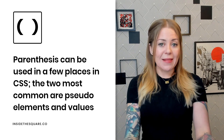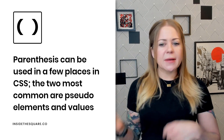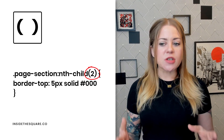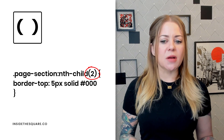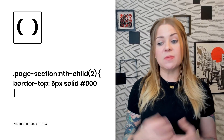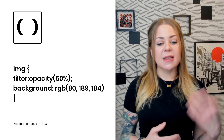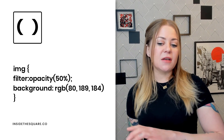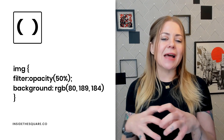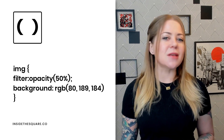The next symbol is parentheses, which can be used in a few places in CSS. The two most common are pseudo elements and values. Pseudo elements can help you specify like the second one of these — for example, telling a browser to give a top border to the second page section by saying nth-child(2). Parentheses can also be used inside a property line for specific values, like an RGB color code or a filter. For instance, giving an image a 50% opacity filter and a background color using an RGB color value.